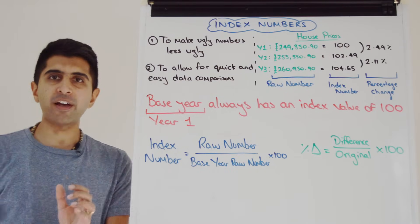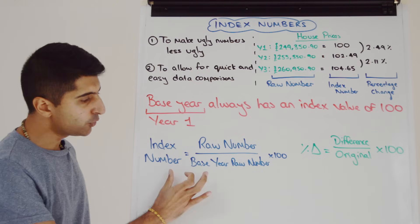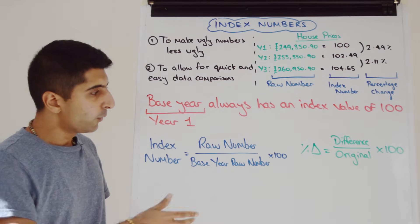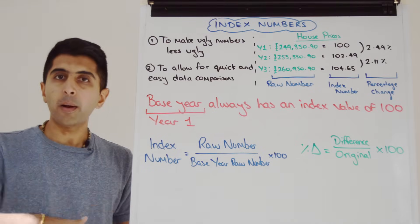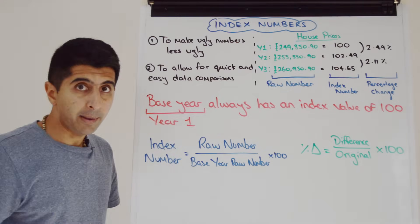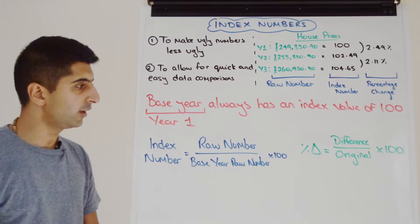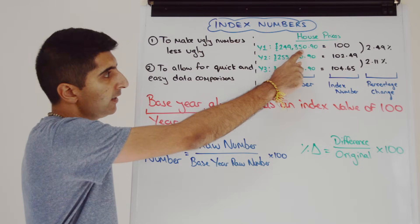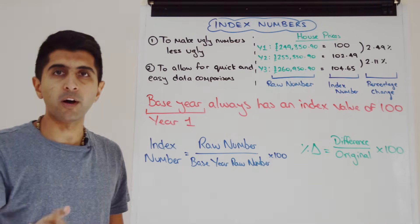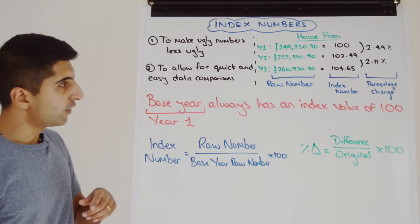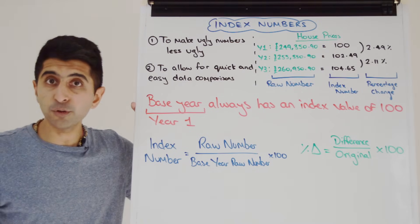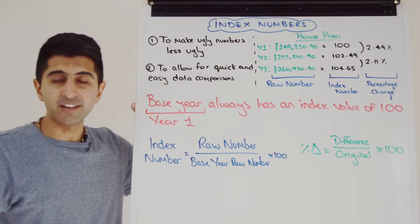Base years always have an index value of 100. We can understand that using our equation of how to convert a raw number to an index number — an equation you have to know. We take the raw number that we want to convert, divide it by the raw number in the base year, and then multiply by 100. For year one, the raw number divided by itself equals one, multiplied by 100 gives 100. So the base year always has an index value of 100. Sometimes you're told the base year; sometimes you have to work out from the number 100 that that year is the base year.